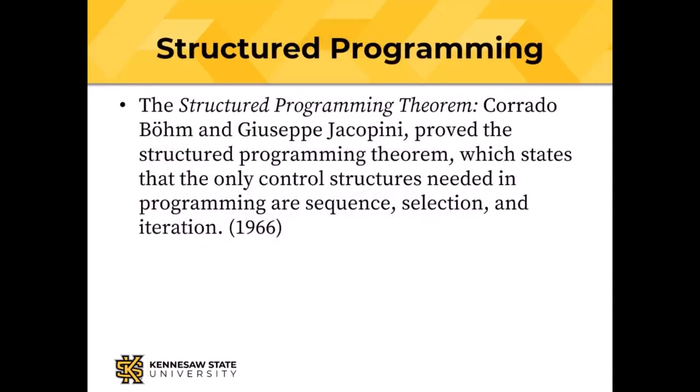To summarize: assemblers produce one machine instruction per assembly statement and are computer-architecture specific. Compilers translate one high-level language statement into multiple machine instructions and can be machine independent. Interpreters read high-level language code and immediately execute the equivalent machine instructions with no translation step — and that distinction is guaranteed to be on the final.